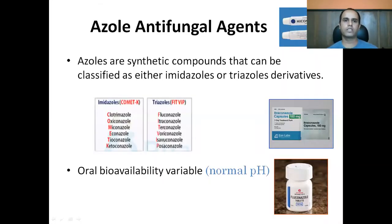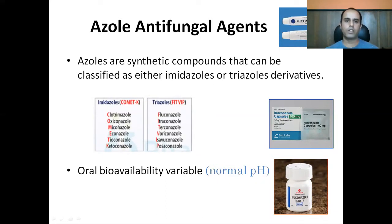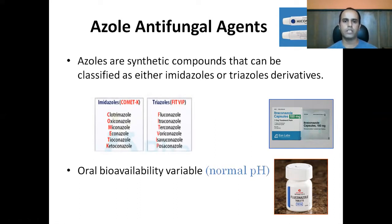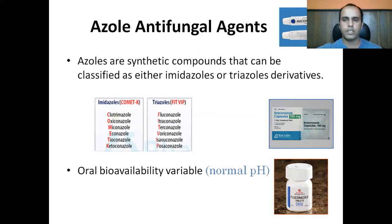The antifungal azoles are synthetic compounds classified either as imidazoles or triazoles. Imidazoles include clotrimazole, oxiconazole, biconazole, econazole, tioconazole, ketoconazole, and the newer laliconazole. Triazoles include fluconazole, itraconazole, posaconazole, voriconazole, isavuconazole, and ravuconazole. Antifungal azoles are used both topically and systemically.